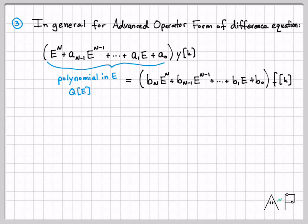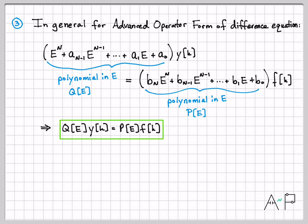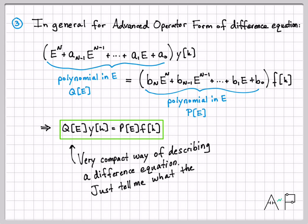And actually, we're going to go ahead and define that as something very specific. The polynomial that weights y of k, we're going to define as q of e. So q of e is a symbol that represents this polynomial. Similarly, on the other side of the equation, we're going to define that polynomial to be p of e. So if you take those definitions, we can now very compactly write down a difference equation in this form right here in the green box. q of e, y of k equals p of e, f of k. And that's really where we wanted to get to in this video. All you have to do is tell me what these polynomials are, and then since we understand what this e notation means, we can go back to the actual difference equation itself.